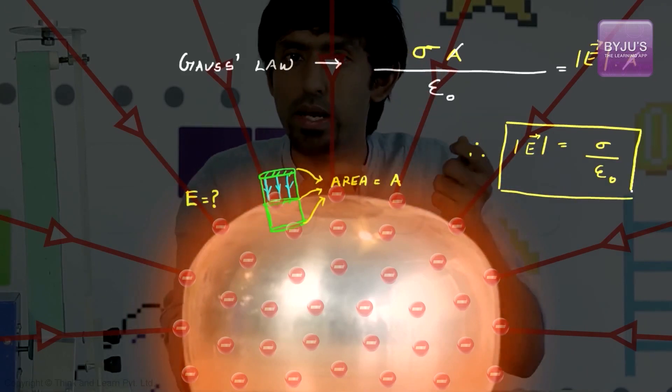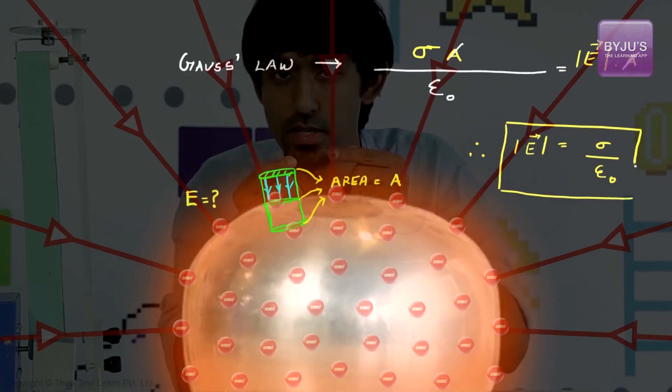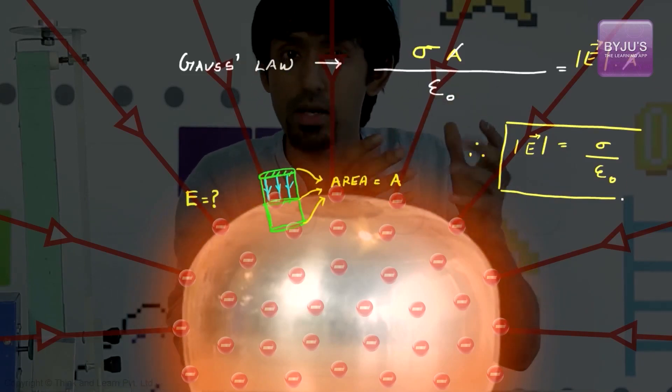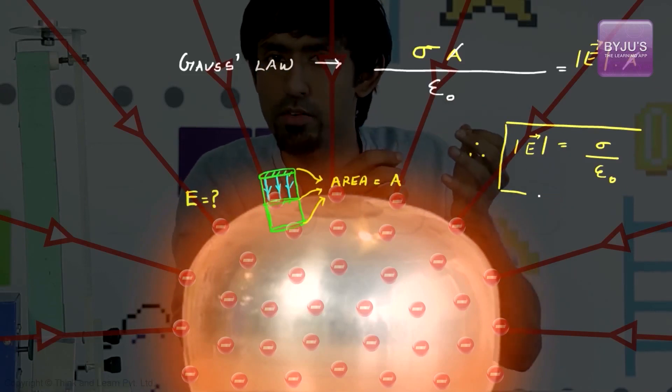So with this in place, you can now calculate what the electric field will be if you know the charge density, and what the charge density's maximum value will be if you know what the dielectric breakdown value, breakdown electric field value is for air.